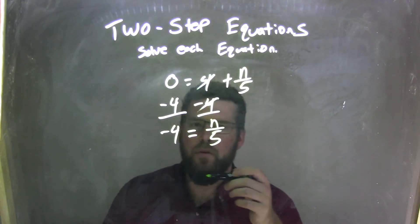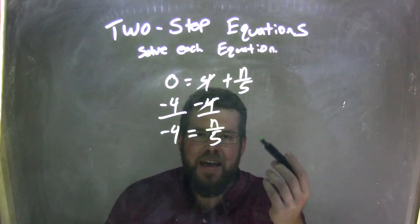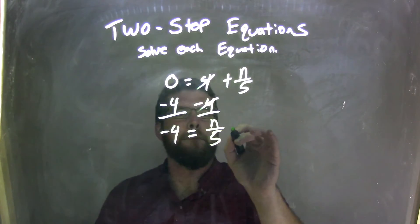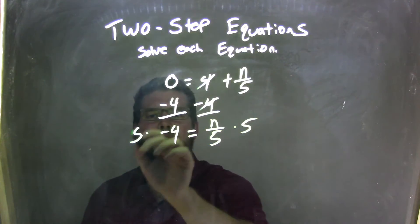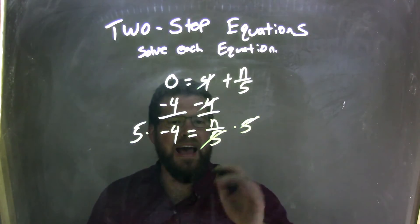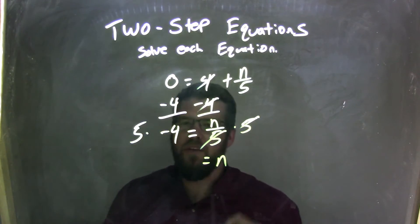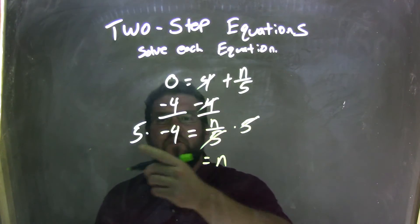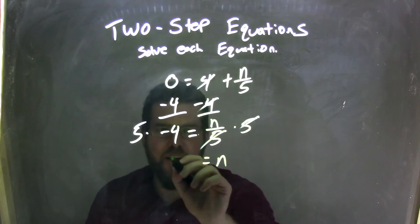So, I have negative 4 equals n over 5. That division of n over 5, the opposite of dividing is multiplying. So, I'm going to multiply 5 to both sides. That cancels these 5s out here, leaves me with just the n, and now I have 5 times negative 4. 5 times 4 is 20, and a positive times a negative is a negative. So, 5 times negative 4 is negative 20.